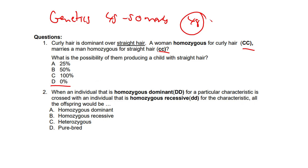A homozygous dominant individual, CC, can only pass the dominant allele C to offspring, and a homozygous recessive individual can only pass the recessive allele c to offspring — capital C versus small c. All offspring will inherit one allele from each parent, resulting in the heterozygous genotype Cc. Since curly hair, big C, is dominant, all offspring will have curly hair with absolutely no possibility of straight hair.